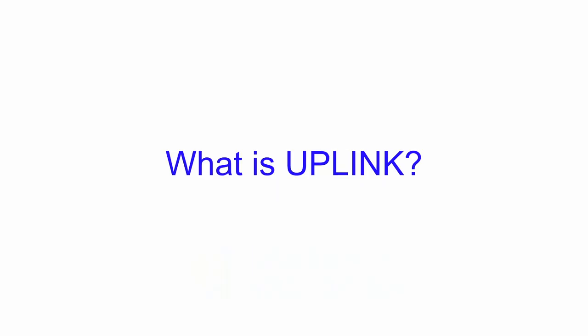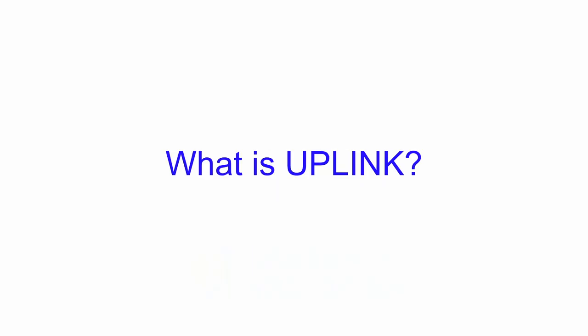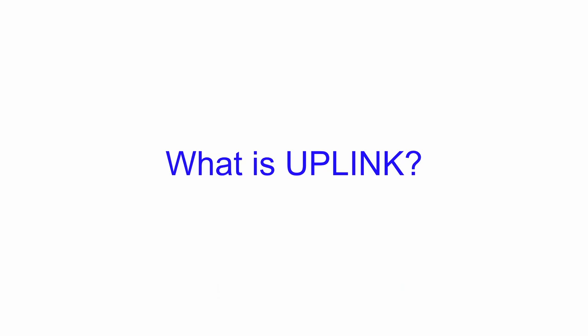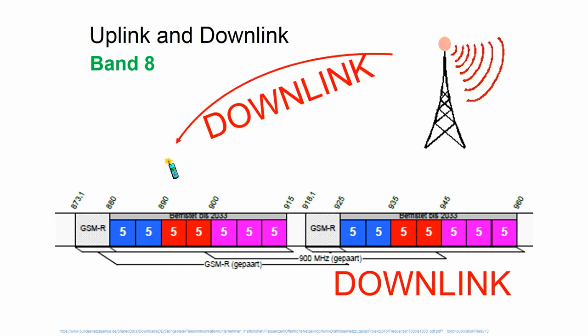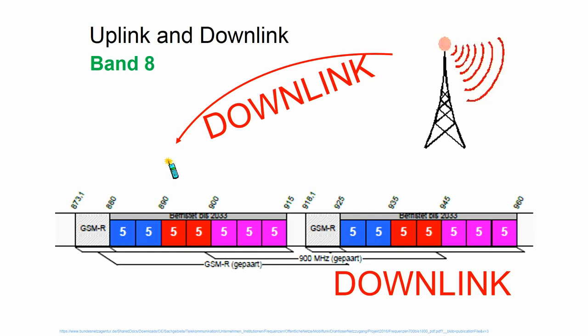What is the uplink? The uplink is the path from the mobile station to the base station. We also have the downlink, which goes from the base station to your mobile phone. The reception indicator on the phone tells us how good the downlink is — those two, three, or four bars.